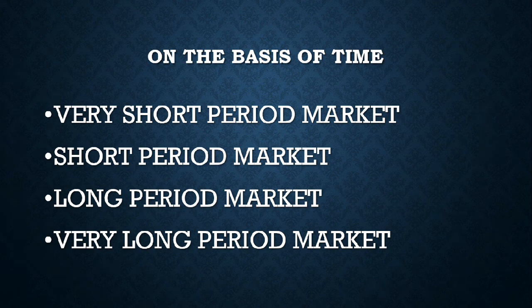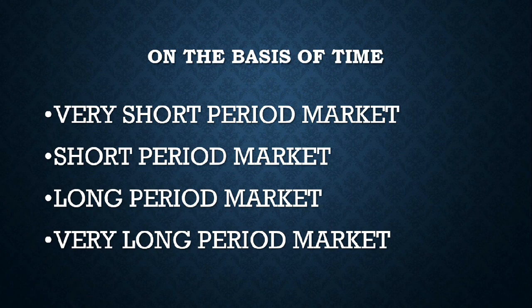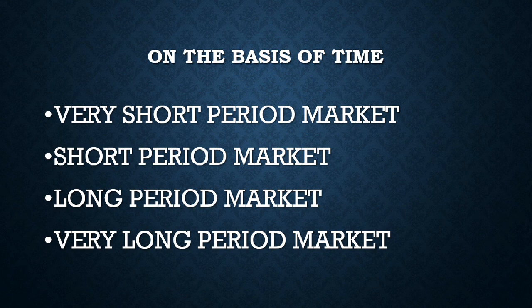At the short period market, the supply curve slopes downward. If you look at the right or left length, it is a downward slope. In this period, the supply of a product can increase to some extent within a short period of time.